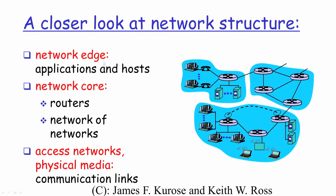Between the network edge and the network core, you have the access networks and physical media — the communication links at the physical level that transfer data in bits. This is where we talk about transmission rate or bandwidth. The transmission rate is what differentiates between different communication links, and which link we use depends on the type of data the network application is dealing with.